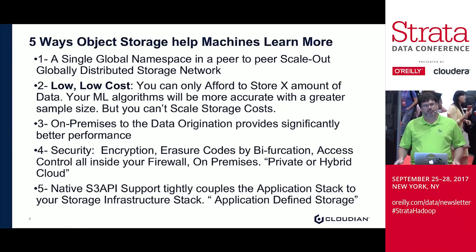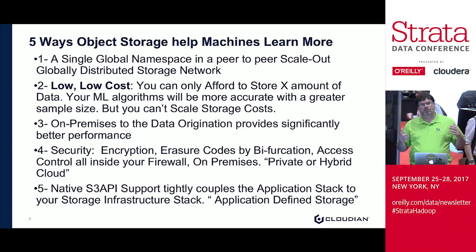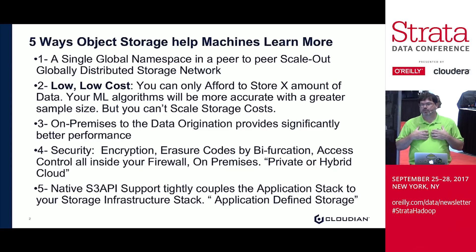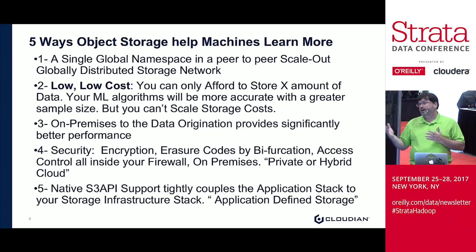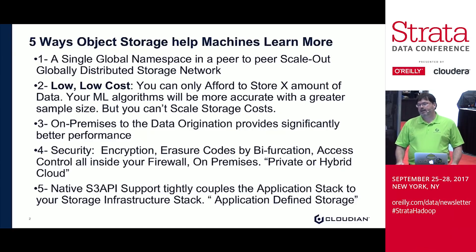Cloudian provides this hybrid approach to storing data. Today we announced that, with Microsoft Azure, we're the first object storage system that natively supports the S3 API and can tier directly to Azure and the Azure Stack in the cloud. That goes along with the fact that for the last year or two, we've been tiering data to AWS S3 buckets as well as to the Google Cloud.